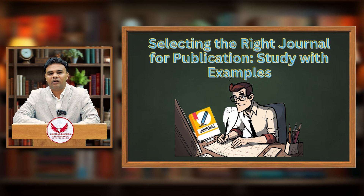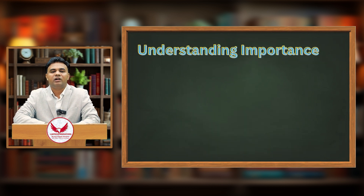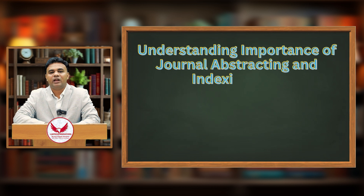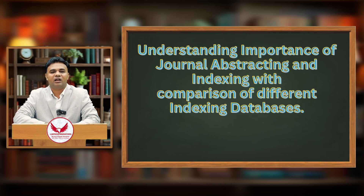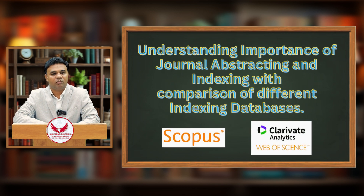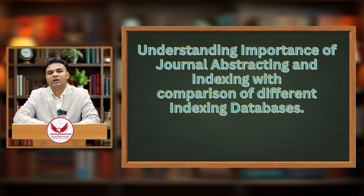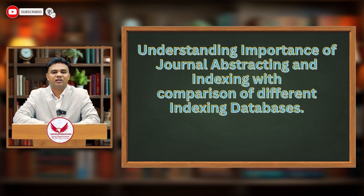Once you are through with that, we will be understanding what abstracting and indexing is — what indexing is, what are the different indexing databases available, what is the classification between Scopus and Web of Science publications, how you can search your indexed article, and how you can understand which journals are getting indexed and which are not.